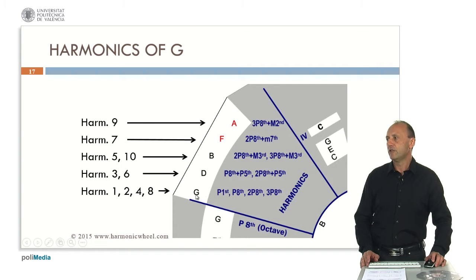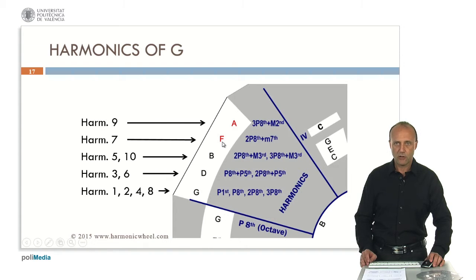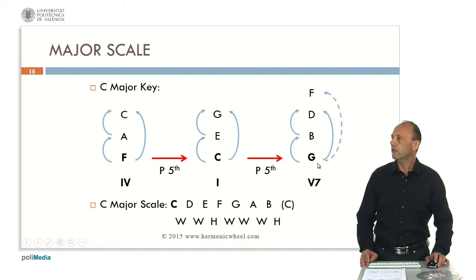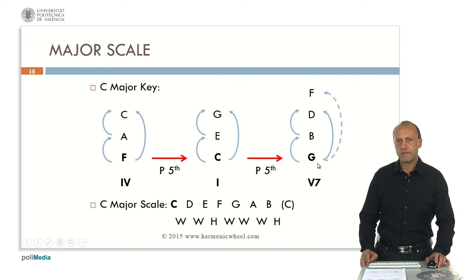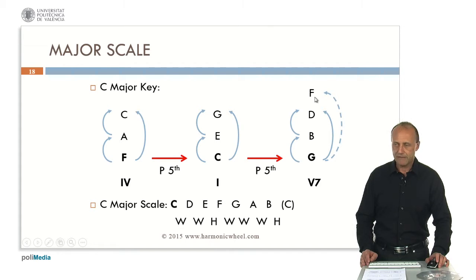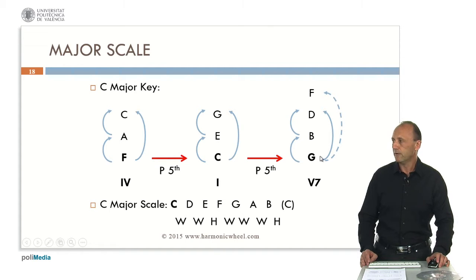If we review the harmonics of G, we can see that the next one is note F, which also belongs to the C major key. So we can add this note to the dominant chord, thus obtaining the dominant seventh chord. The name seventh comes from the interval from G to F, which is a minor seventh. This is a dissonant chord.